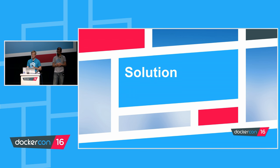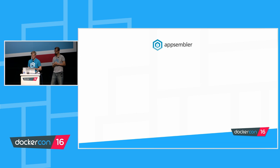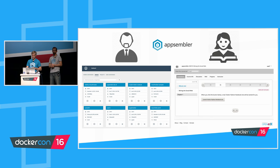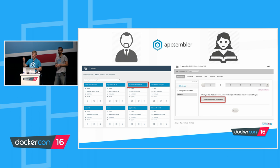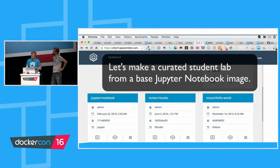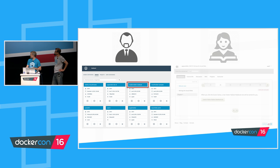Let's talk about the solution we came up with to satisfy these business requirements. Appsembler serves both the business user — the course author or curator of lab environments — and the student. We provide an interface for both users. The admin user is creating the master lab on the left, and on the right the student is creating their own instance from that master lab. To illustrate this more clearly, I'm going to show a short video demonstrating how the admin user creates the lab environment and embeds it in the courseware for the student to access.